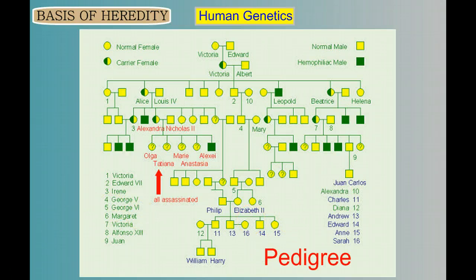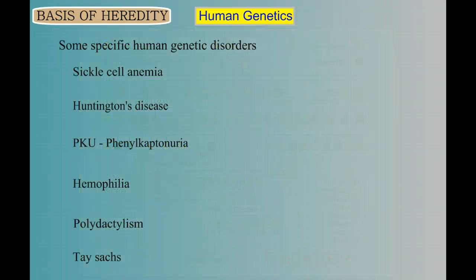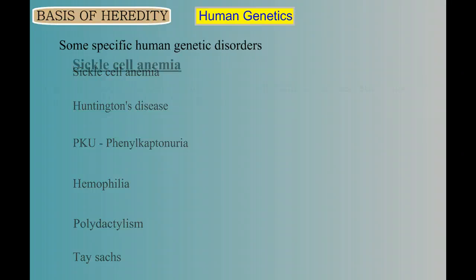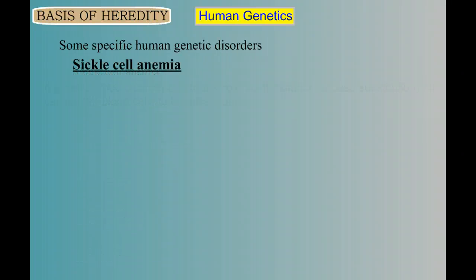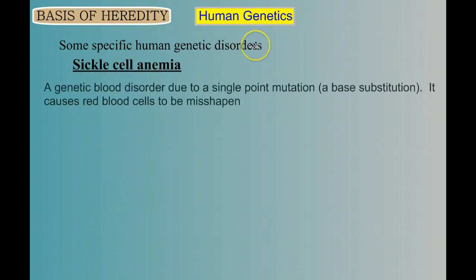In this video, we're going to talk about a couple of specific human genetic disorders. Let's start with the first one: sickle cell anemia. Sickle cell anemia is a genetic blood disorder due to a single point mutation — a gene mutation, specifically a base substitution.